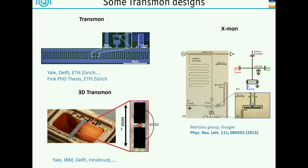Another variant very similar is the so-called Xmon by the Martinez group. The qubit actually sits here - you see this cross, which has a capacitance to the ground plane. Down there is where the junction sits. This is a SQUID, so two junctions in a ring. Nevertheless, it's the same circuit - a Josephson junction in parallel to a capacitance. All of those are described by the same system, although the actual realization is slightly different.